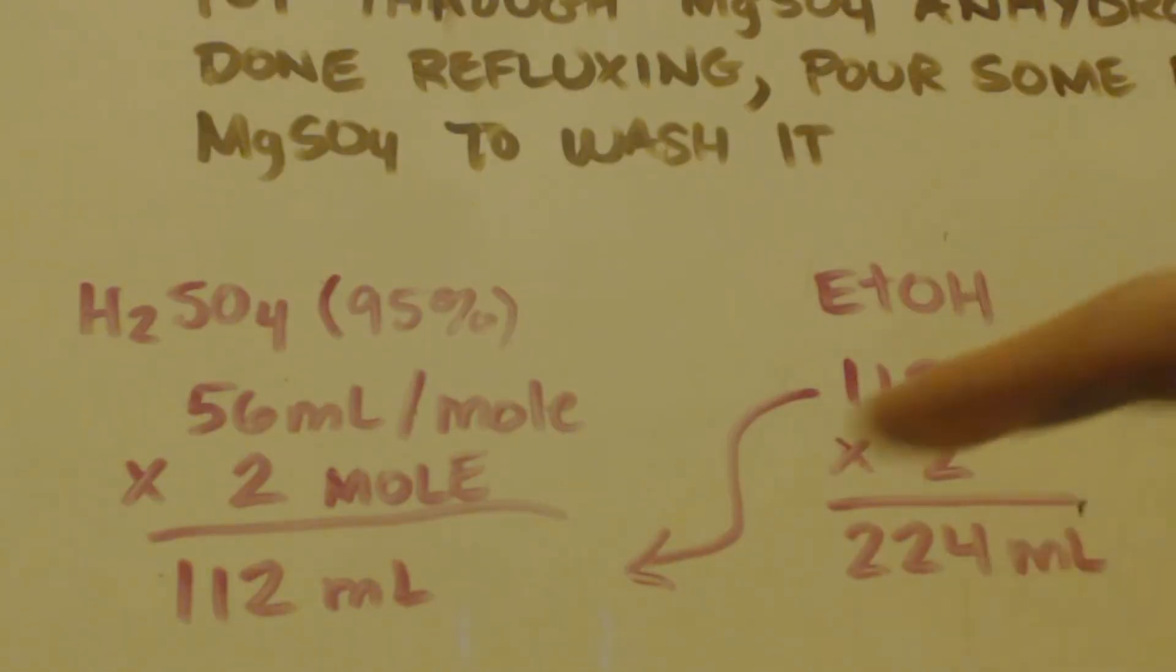The ethanol is picked based on what this is. This is 112 milliliters. Remember, we wanted ethanol to be twice as much volume. So that's 112 times 2 is 224 milliliters. Keep in mind, these are supposed to be anhydrous. If you have water in the pot at the get-go, you've already pushed the equilibrium to the left. You don't want water.